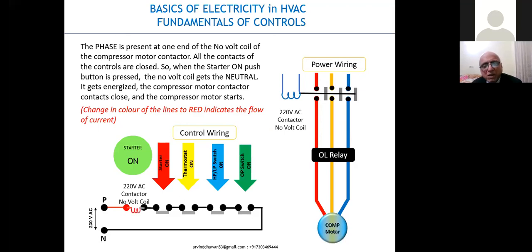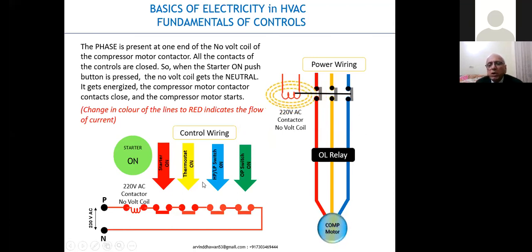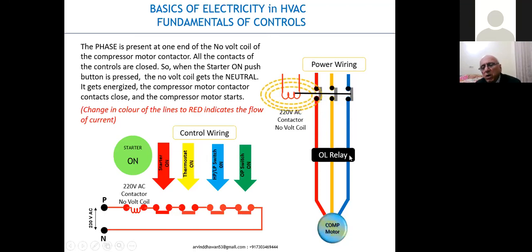Then a little bit about controls — how these things work. You can see the current flowing and all the contacts of all the controls are in series with the no-volt coil of the contactor. If the current flows through all the contacts, then the no-volt coil gets the supply. It creates a magnetic field, pulls the plunger, and all the main contacts come into circuit, completing the power circuit to the compressor motor.